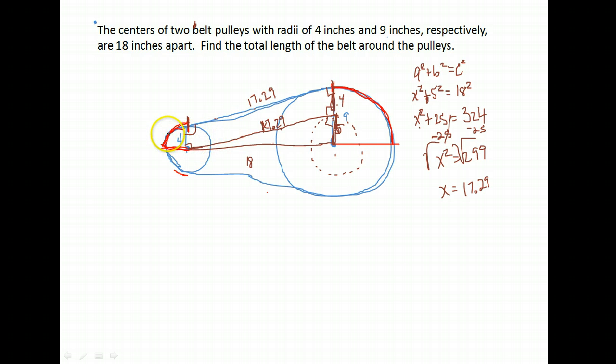The other two lengths I need to find are here and here, those arc lengths. Remember to find an arc length, you take the radius times the radian measure of the angle that's creating your arc. So I need to find out what's the measure of this angle in radians.